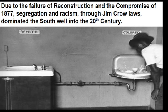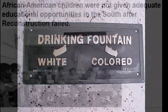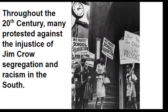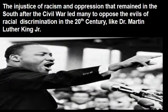Due to the failure of Reconstruction and the Compromise of 1877, segregation and racism through Jim Crow laws dominated the South well into the 20th century. As Reconstruction failed, so did the educational opportunities of many African Americans. Protests against the injustice of Jim Crow segregation would not gain real traction until people rose up to protest racial discrimination in the 20th century, like Dr. King.